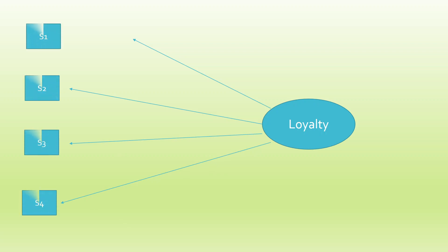For example, in our previous example we had seen that loyalty is captured by four statements S1, S2, S3 and S4. Now it may be possible that S1 is not affecting loyalty in a linear proportion — it may be quadratic — and we have to handle such issues in SmartPLS.